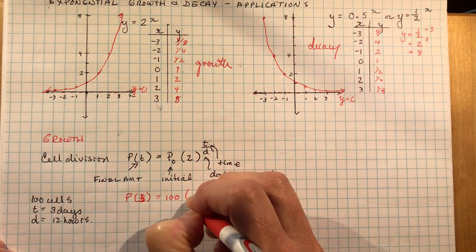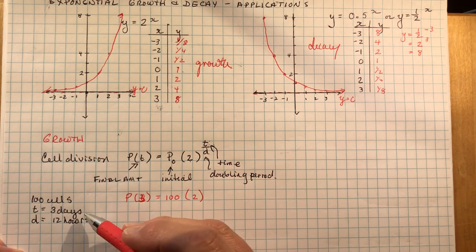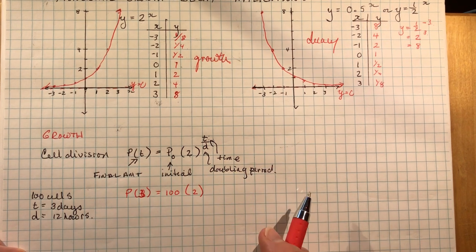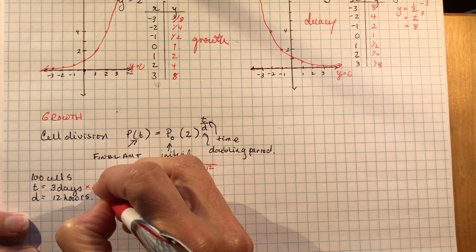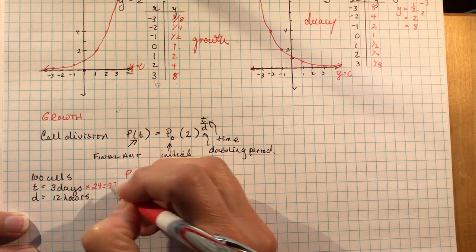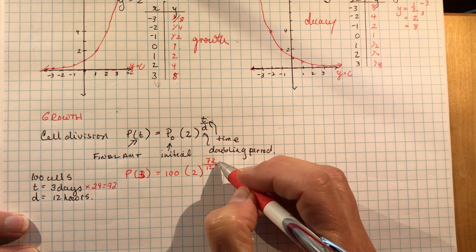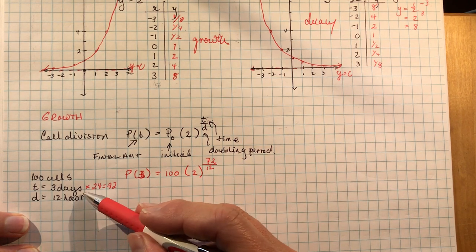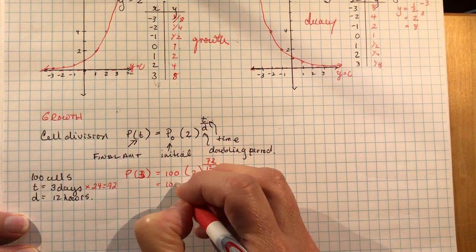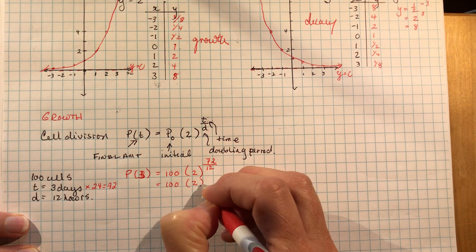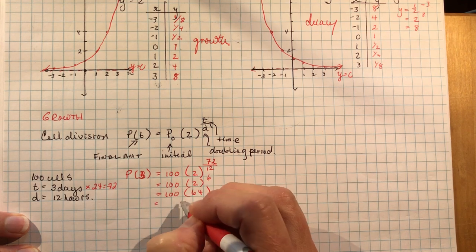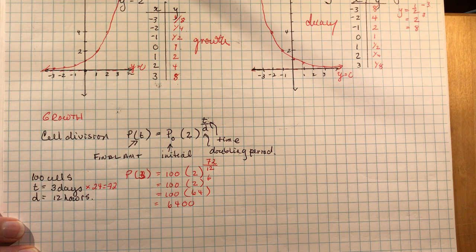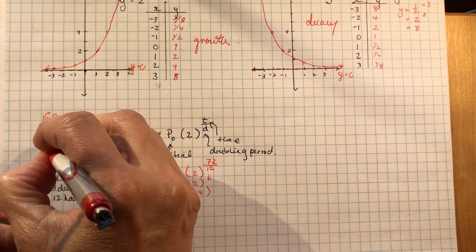Well, I started with a hundred cells. They were doubling. The time that went by was three days, but it doubles every 12 hours. So if I'm going to use 12 hours for my denominator here, I have to put the number of days into hours. So 24 hours times three would be 72. So my time up here is going to be 72, which means it's going to double six times. That makes sense. So I would have a hundred times two to the power of six. And two to the power of six is 64. And that would be how many cells I have after three days. So you can make up any word problem you want. So that's the first example, cell division.